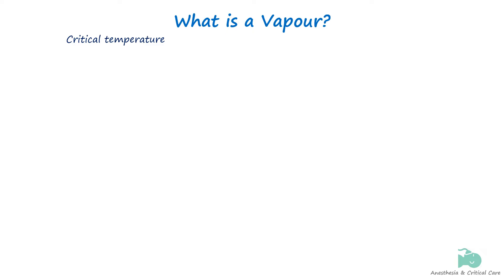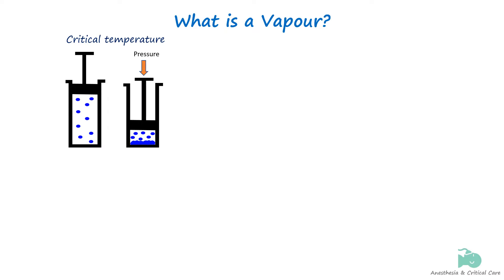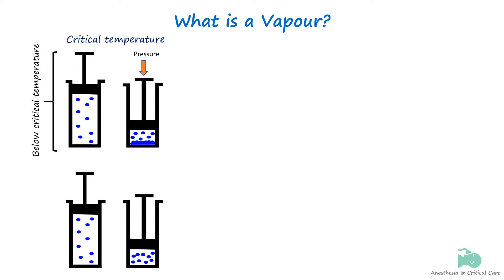When a gas is compressed intensely, the particles that make up the gas are brought closer to each other. As you continue compressing, at some point the particles will coalesce, turning the gas into a liquid. However, if the gas is above a certain temperature known as the critical temperature, no matter how much pressure is applied, the gas will not turn into a liquid.